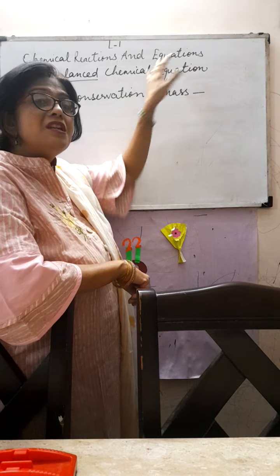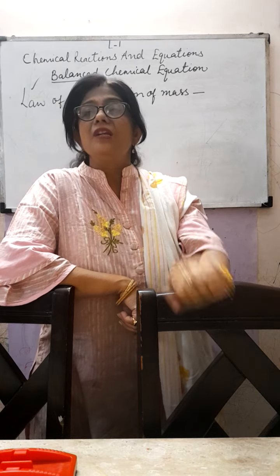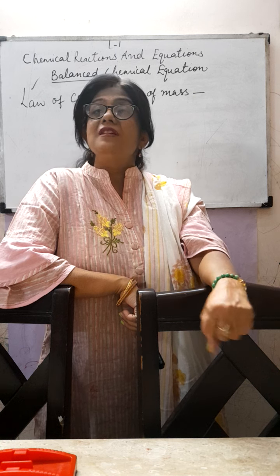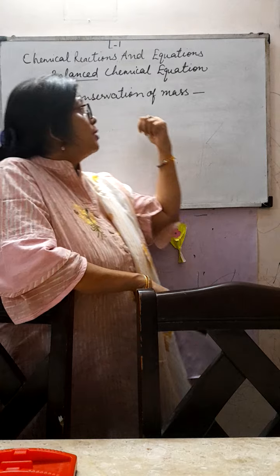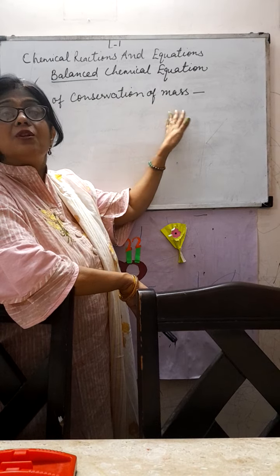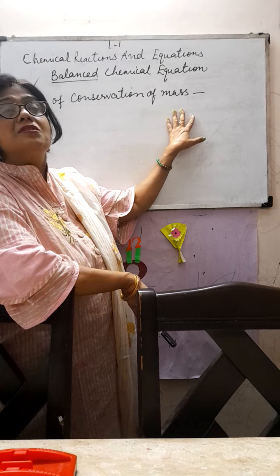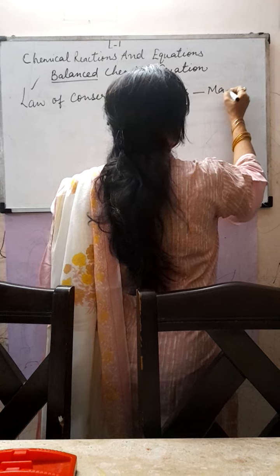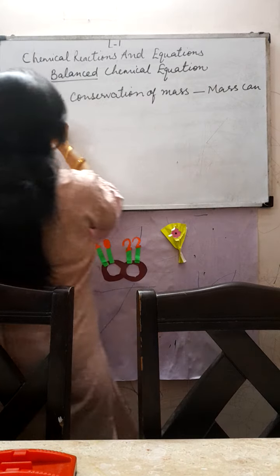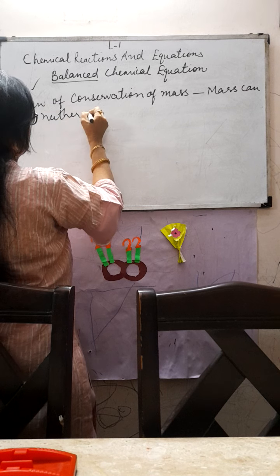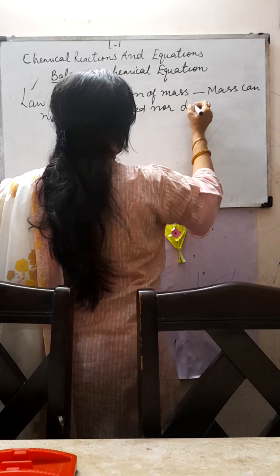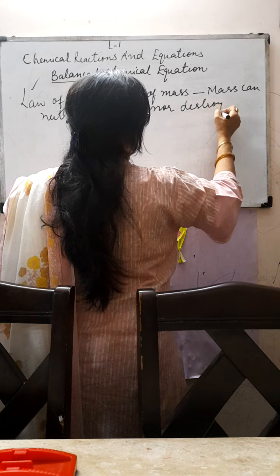What is the need of balancing a chemical equation? Why are we balancing it? There is a reason behind this — we are going according to the Law of Conservation of Mass. There is a law in chemistry which says that mass can neither be created nor destroyed in a chemical reaction.